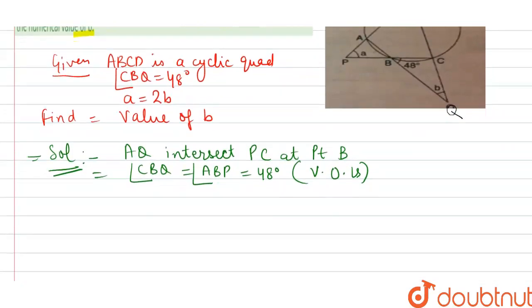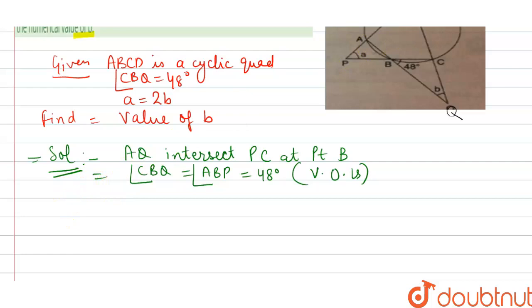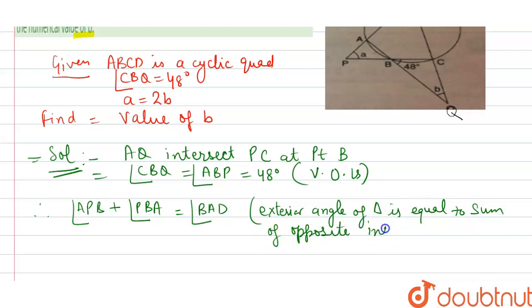Here, angle BAD is the exterior angle of triangle APB. Therefore, angle APB plus angle PBA equals angle BAD. Exterior angle of a triangle equals sum of opposite interior angles. This is your reason.